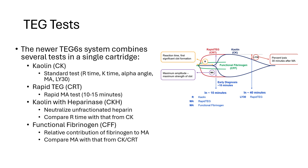The CKH, or kaolin with heparinase, combines the CK TEG with heparinase to neutralize any unfractionated heparin, either exogenous or endogenous in the patient. The CKH test is considered heparin neutral and has been validated for patients who are on cardiopulmonary bypass and are currently anticoagulated with heparin.